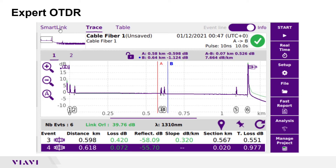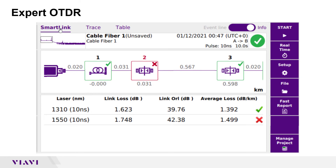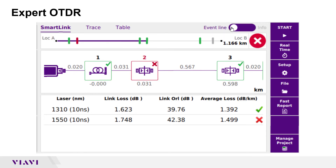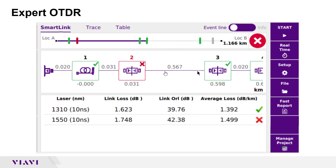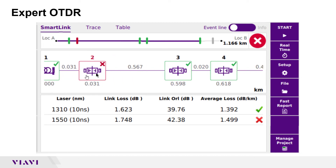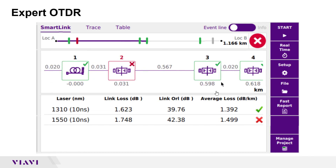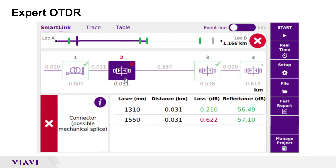SmartLink offers a simpler icon-based view of the fiber under test. When SmartLink is selected, I recommend the event line view, which shows all events on the fiber under test. If there are more than four events, swipe left and right on the main display to select the icons to view. In the center display, you can view summary results for each acquisition. Events are marked with a green check or red X based on pass-fail settings. You can tap on any event to view detailed results for that event.